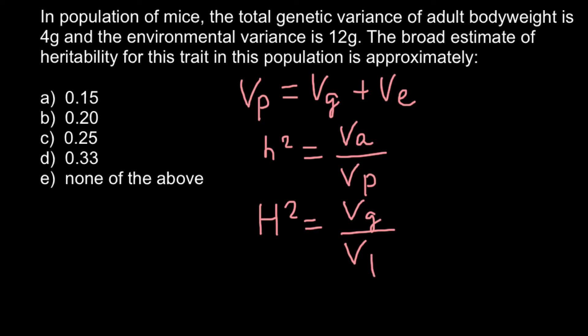What is the difference between these two formulas? With broad sense heritability we have variance due to genetics.